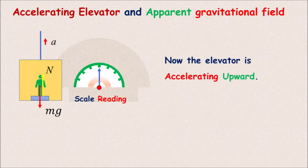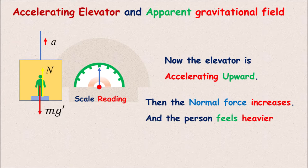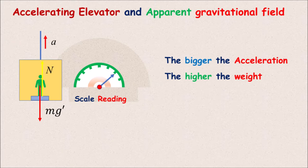Now the elevator is accelerating upward. Then the normal force increases and the person feels heavier and the scale reads higher. The bigger the acceleration, the higher the apparent weight.